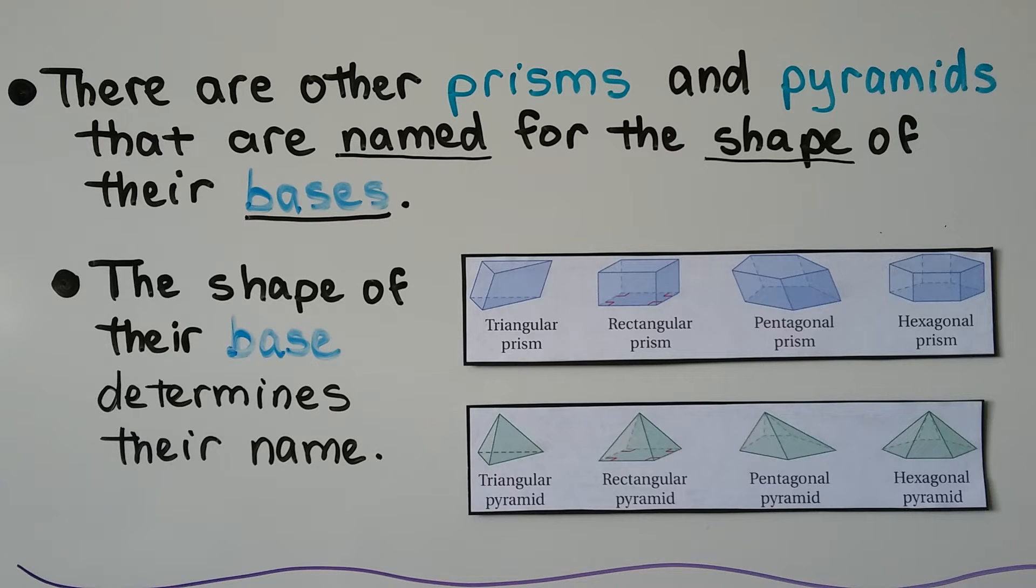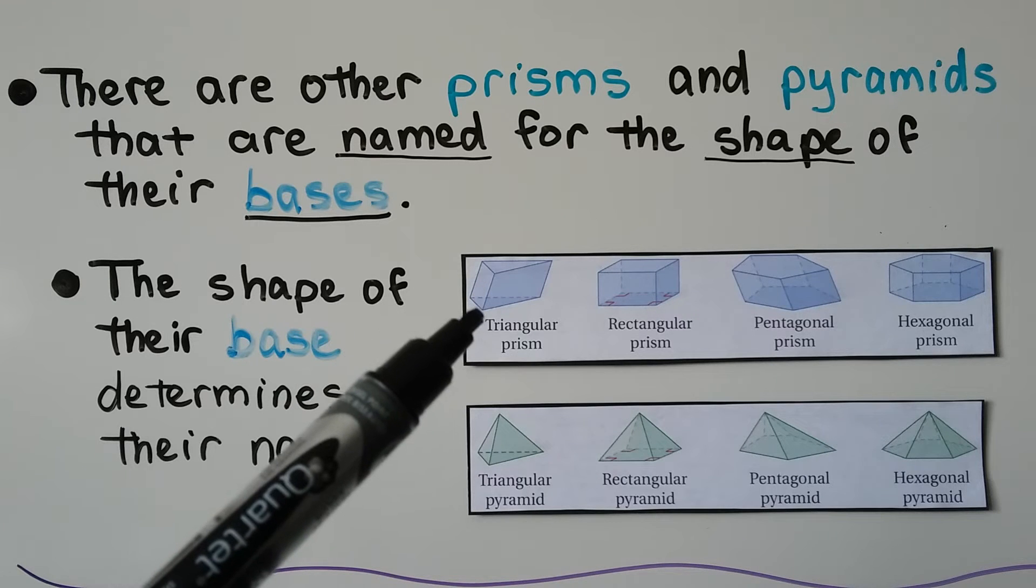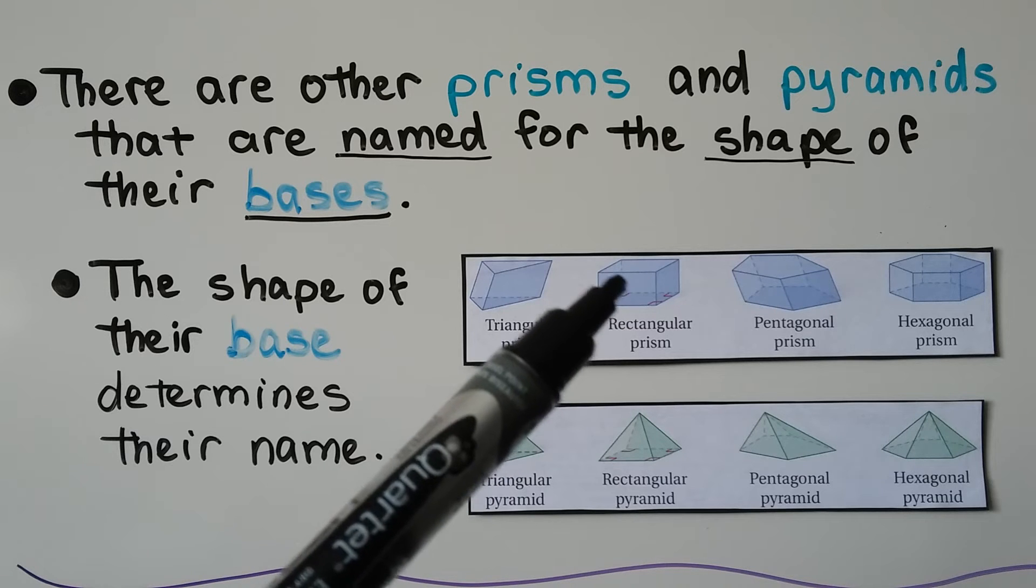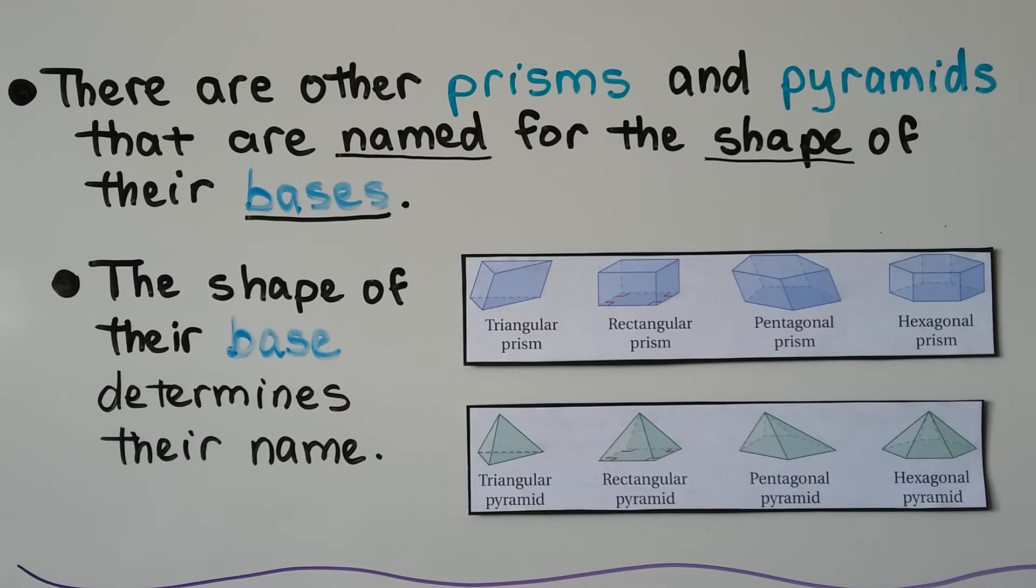There are other prisms and pyramids that are named for the shape of their bases. So for this prism, it's a triangular prism because its base is a triangle. Rectangular prism because its base is a rectangle, and so on. Pentagon, pentagonal prism. Hexagon, hexagonal prism. And same thing with these pyramids. It's got a triangle base, so that's a triangular pyramid. And this is a rectangular pyramid because it's got a rectangle. That's got a pentagon. That's got a hexagon. So the shape of their base determines their name.